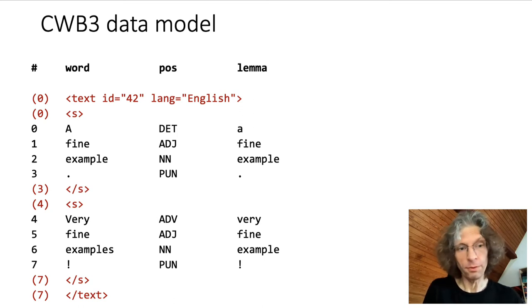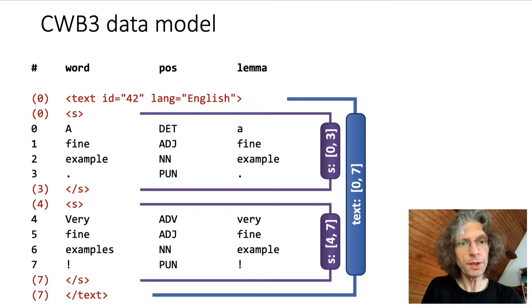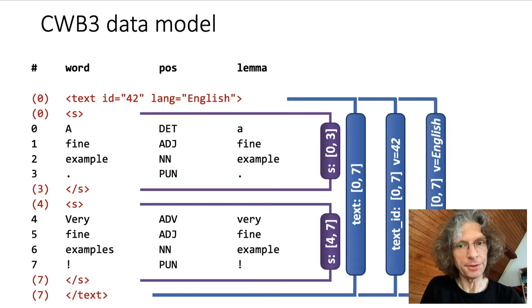A drawback of this format is that structural annotation, often inserted in the format of XML tags, doesn't really fit into the table, so these structural attributes are stored separately, as ranges of start and end corpus positions. In the case of annotations in a start tag, copies of the attribute are created that are annotated with the corresponding values.